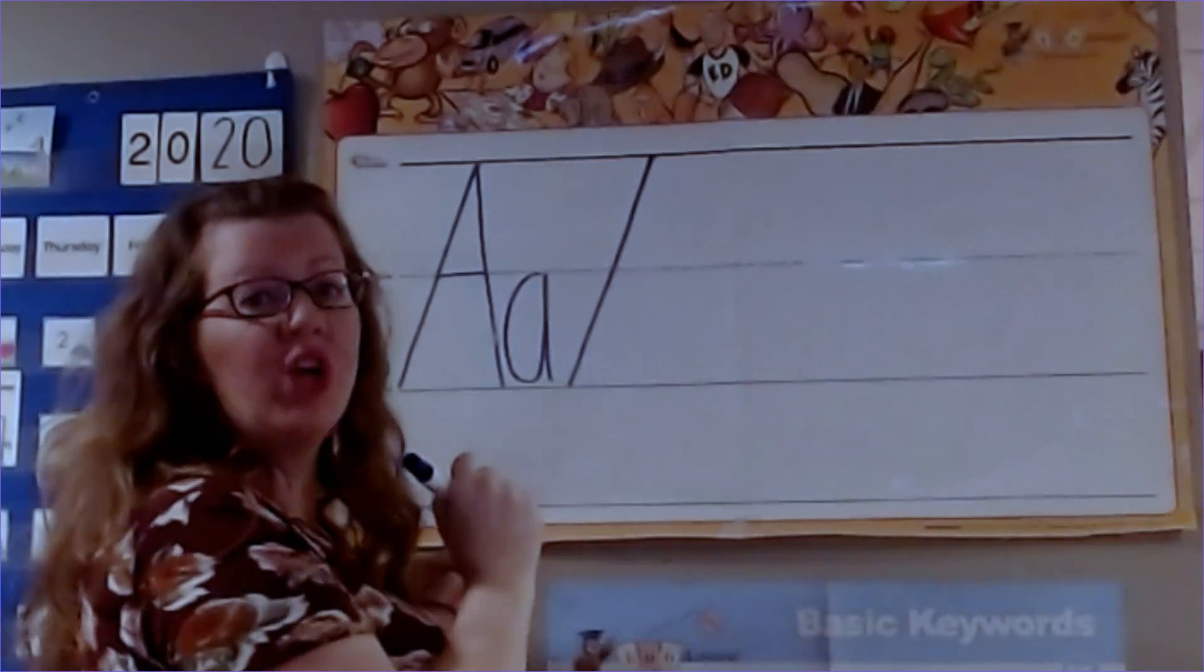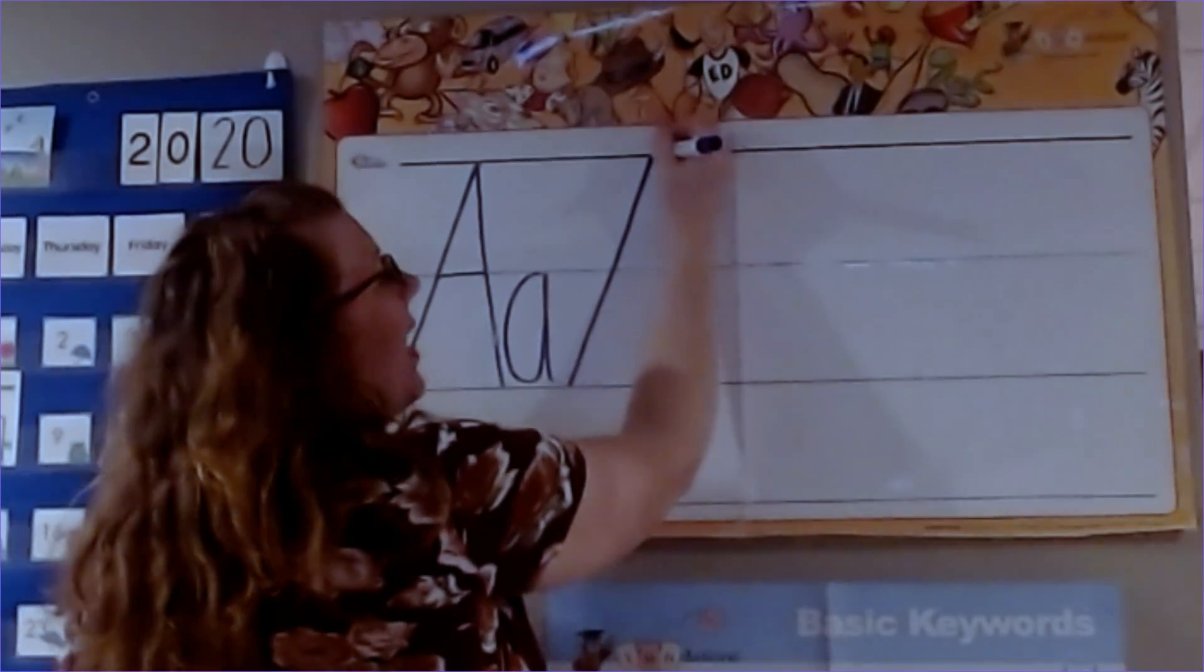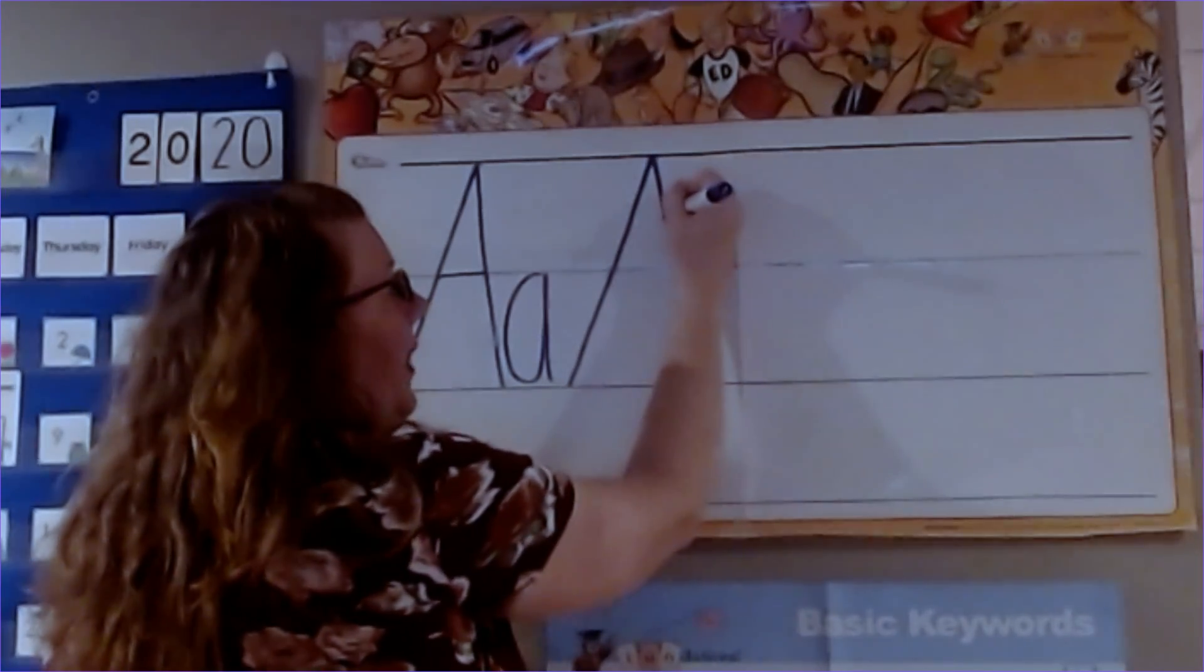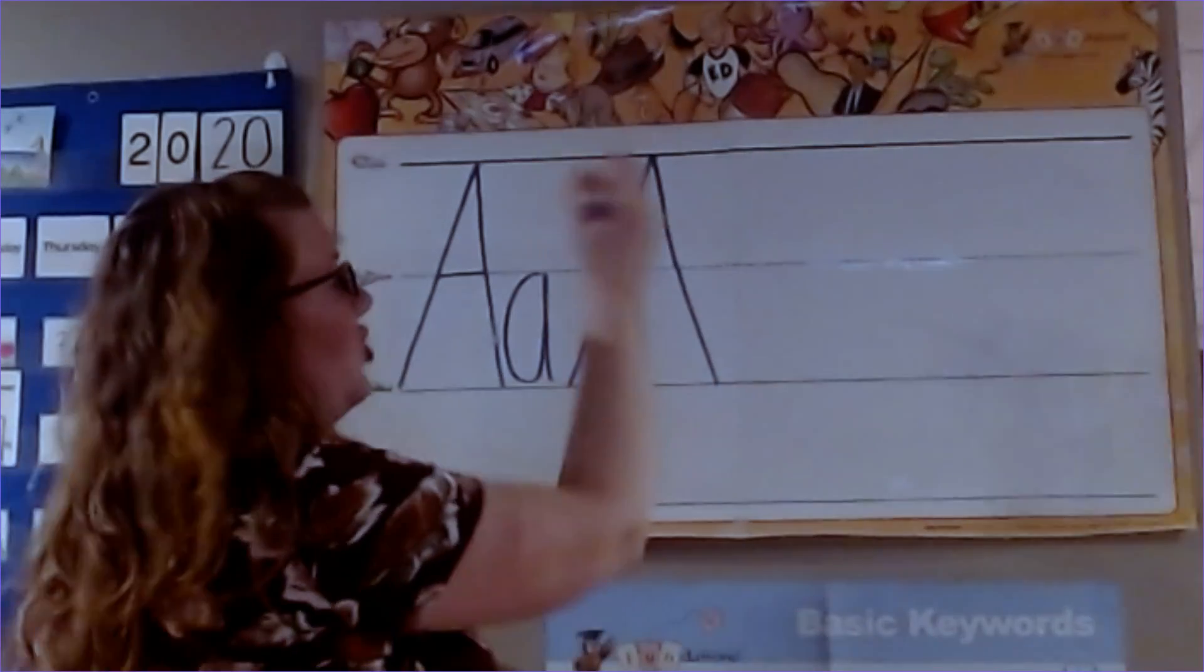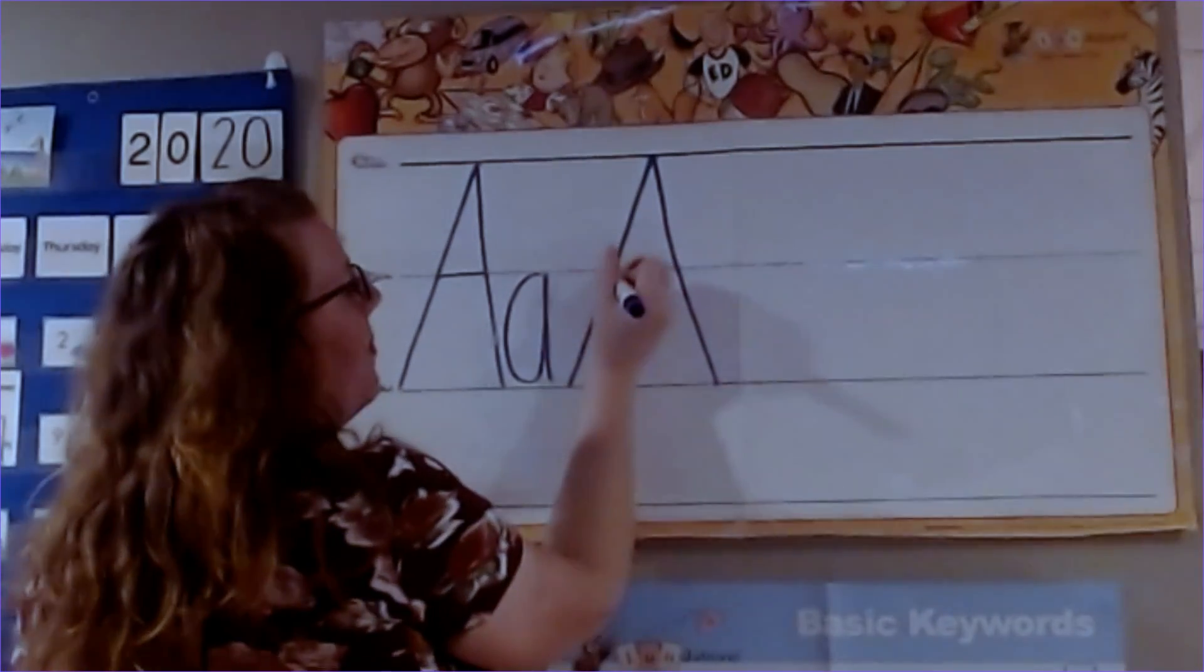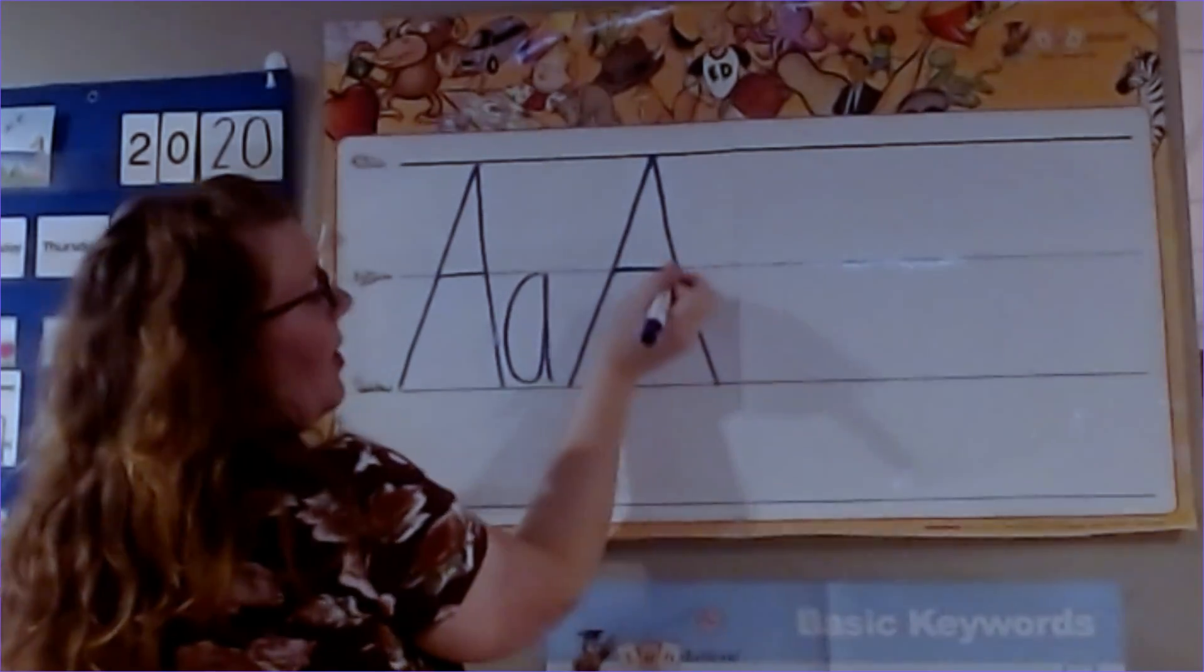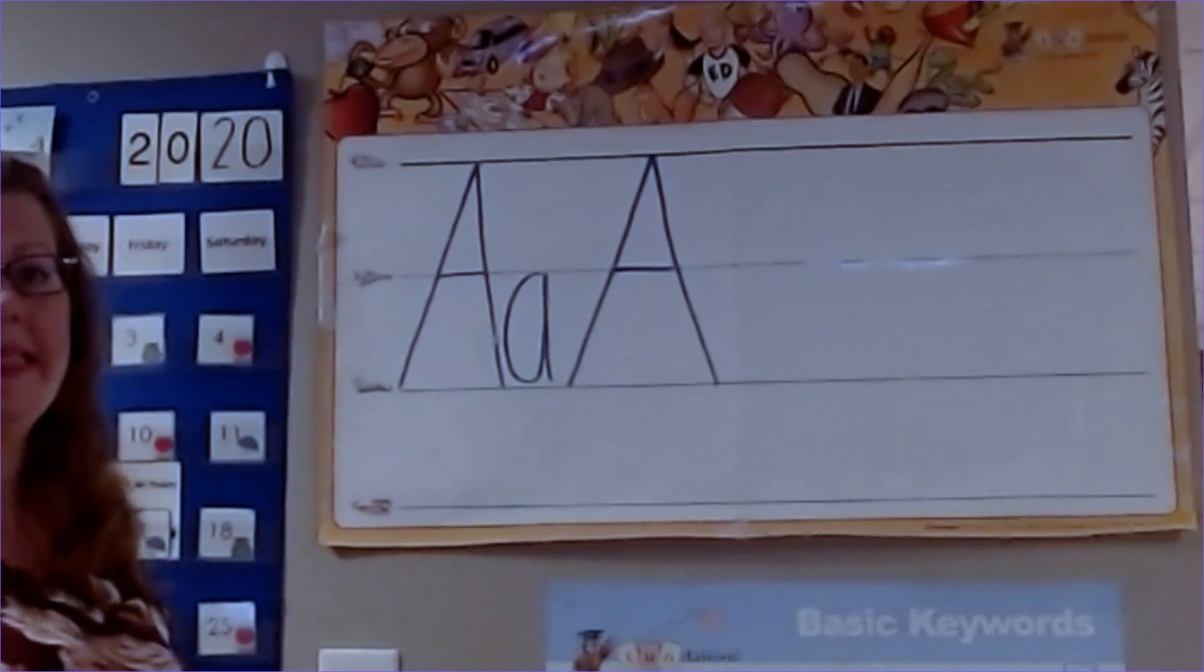Then we're going to jump up, back to the top, slide the other way down to the grass, and then we're going to jump to the plain line and make a line across the middle. That's uppercase A.